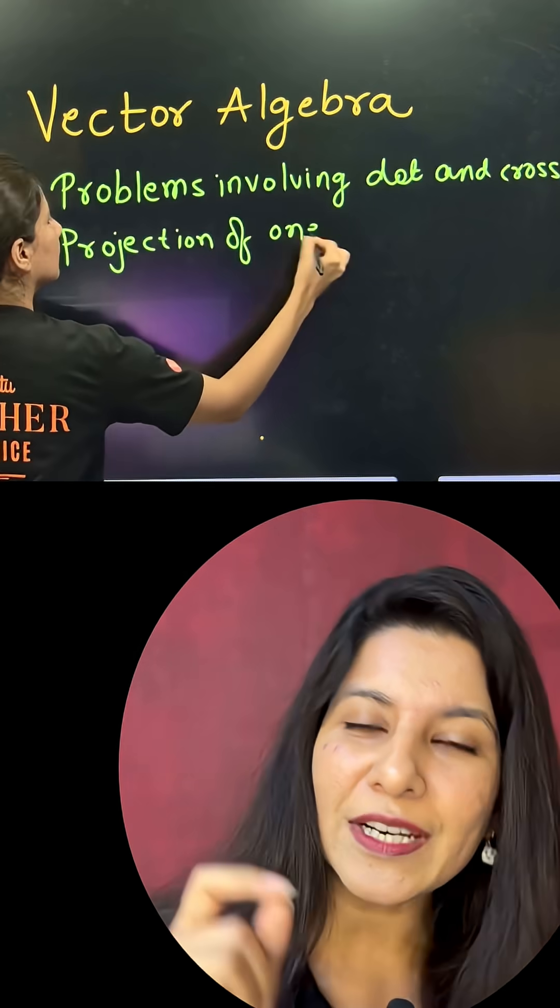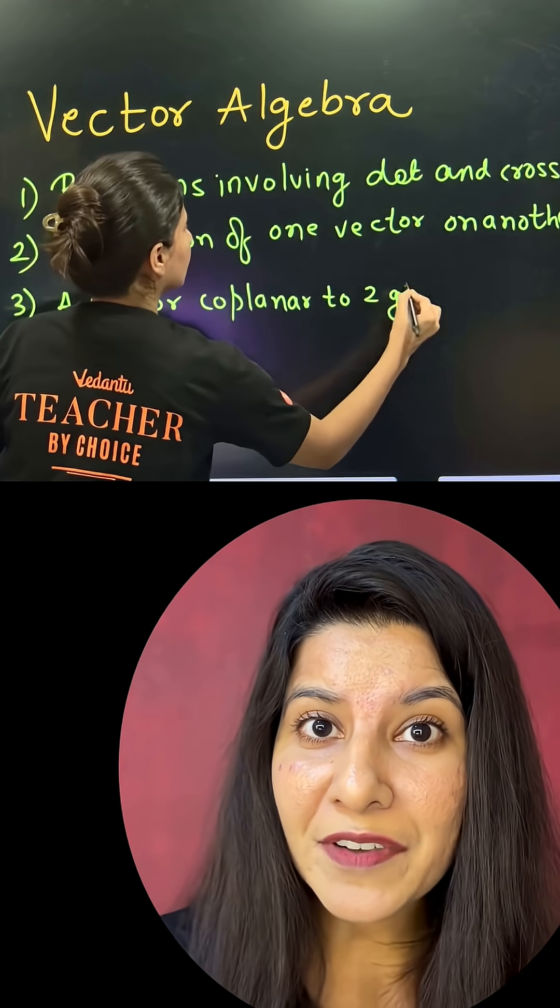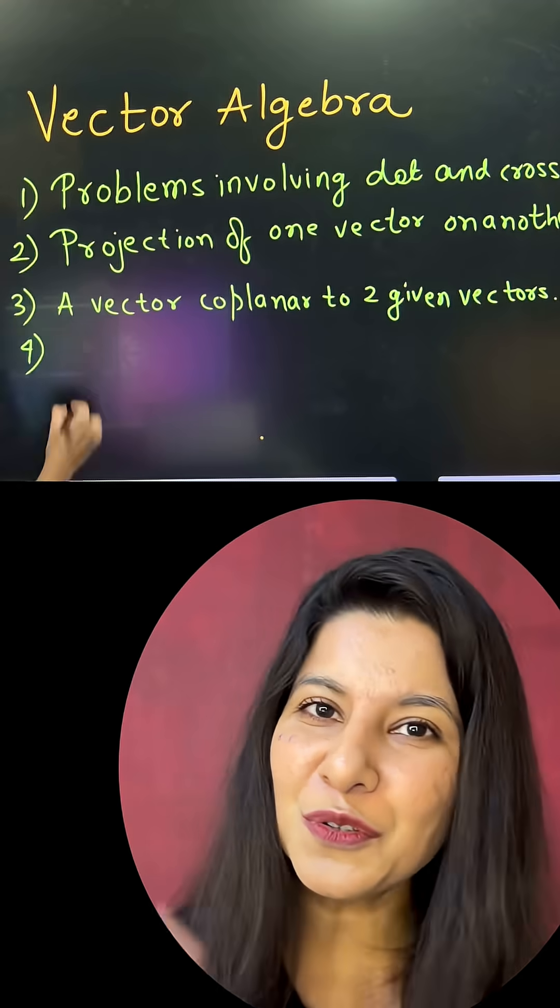On number 2, we have projection of one vector on another vector. Also, you should know how to write a vector which is coplanar to two given vectors and a vector which is perpendicular to two given vectors.